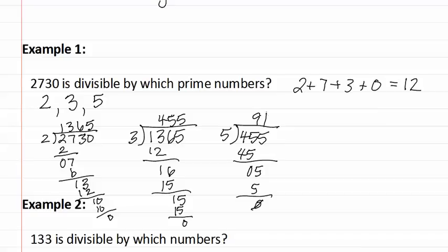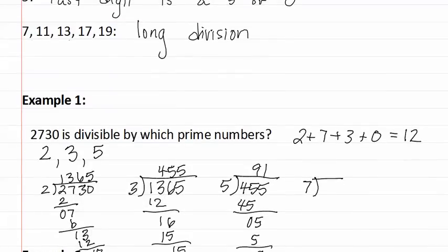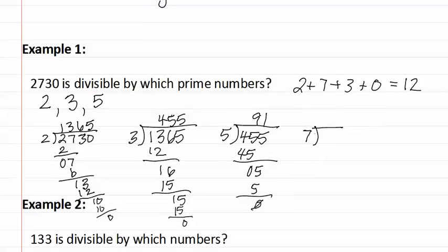To see if ninety-one is a prime or composite number, meaning there may be more prime numbers in it, we start dividing by the next prime number, which would be seven. Remember, for seven, eleven, thirteen, seventeen, and nineteen, we must use long division. Seven goes into nine once, and seven goes into twenty-one three times. We now have resulted with a prime number of thirteen, which means we have found all the prime numbers.